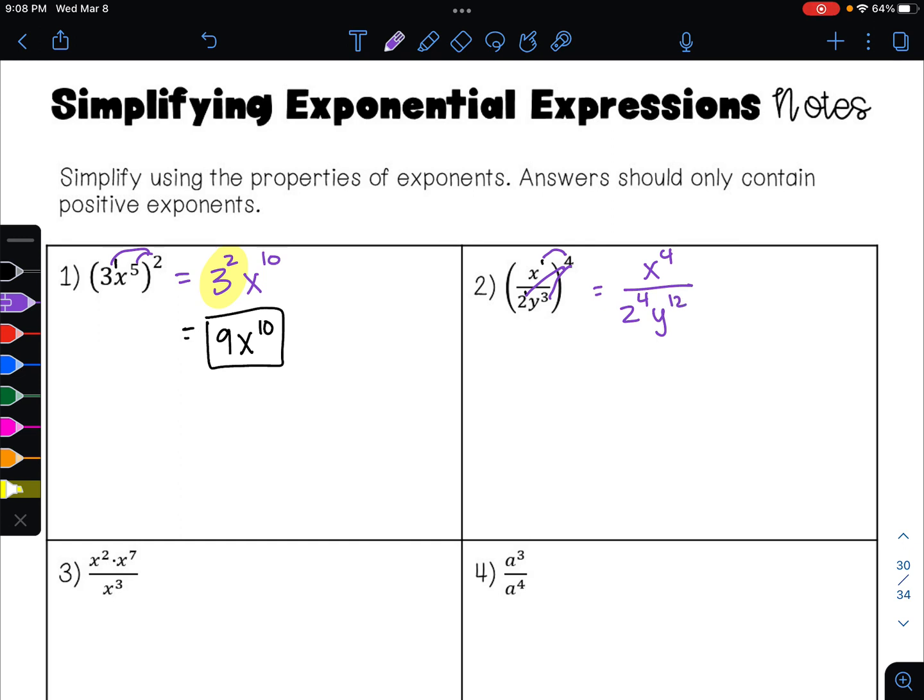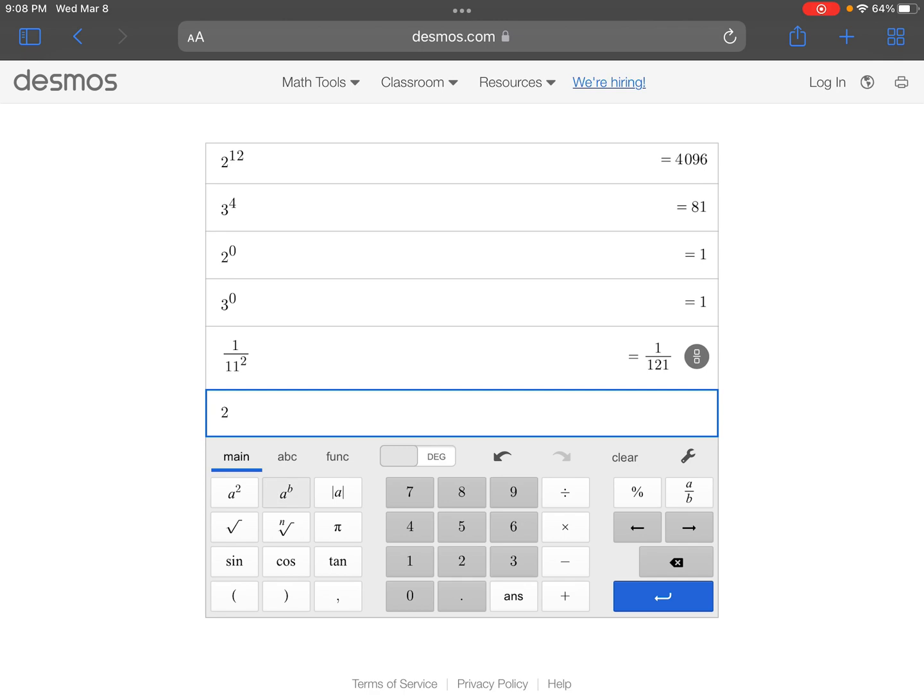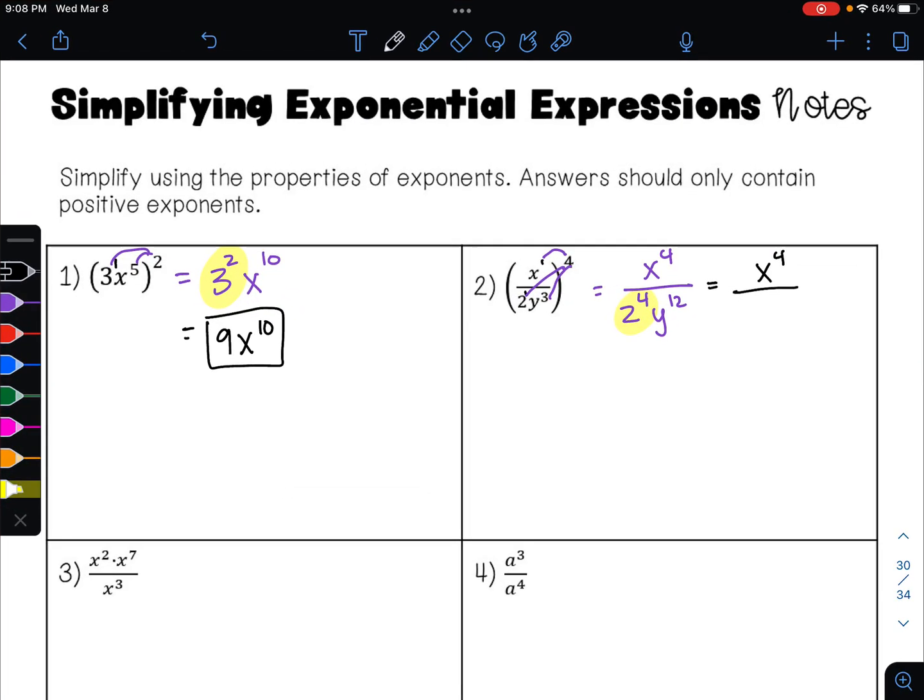I can simplify this further. I can evaluate this numeric expression. 2 raised to the 4th power. 2 raised to the 4th power is 16. So I'll have 16y to the 12th in my denominator.